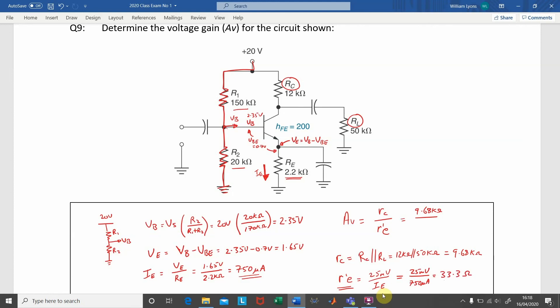Now that we've calculated the value of R'E, we can include it in our voltage gain calculation, RC divided by R'E. So, we put in 9.68 kilo ohms divided by 33.3 ohms, and that gives us an overall voltage gain of 291.